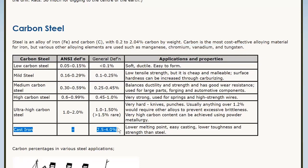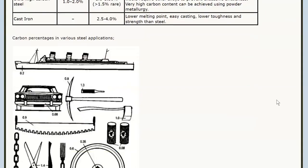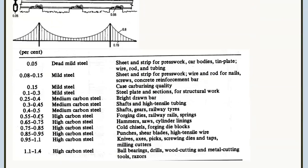If you go over 2% carbon — like 2.5% — you're in a different type of metal altogether: it's called cast iron, not steel. Steels really only go up to about 1%; once you get over 1% you need to mix in other alloys. The very hard steels, going up to about 1.5%, are used for things like ball bearings, cutting blades, files, and sharp tools. But those would shatter if hammered, whereas a hammer has its carbon content back down.